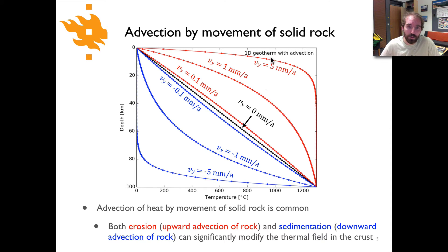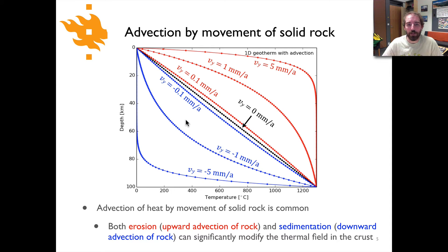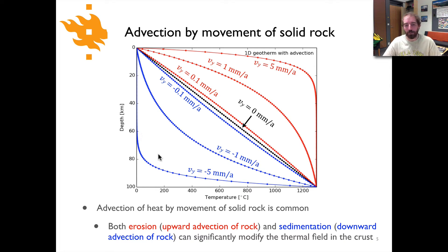The top portion in red shows cases of the influence of erosion. The bottom portion looks essentially like a mirror image — that is the effect of sedimentation, where larger sedimentation velocities push very cold temperatures to extreme depths. With five millimeters per year of sediment accumulation, we would predict temperatures of almost zero at 60 kilometers depth.